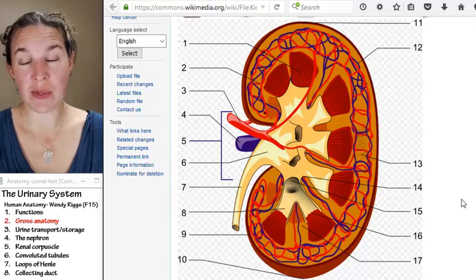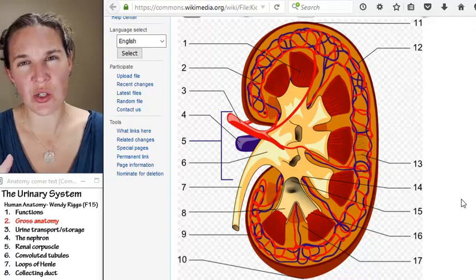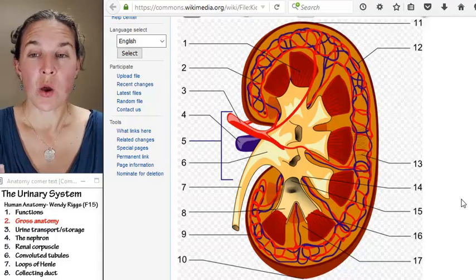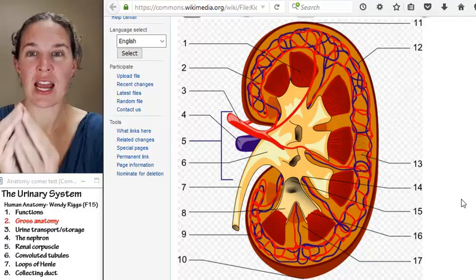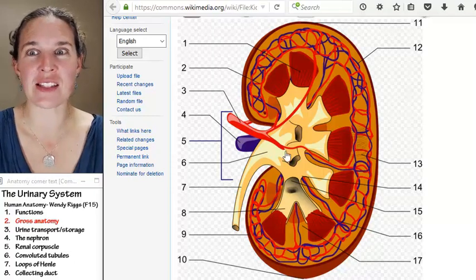We're going to start looking at the gross anatomy of the kidney, and we're going to do it in two different ways. We're going to look at a kidney that's just hanging out, and then we're going to look at a kidney that's been sliced in half.